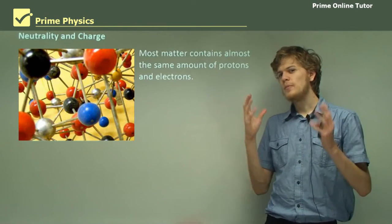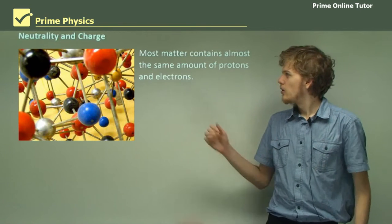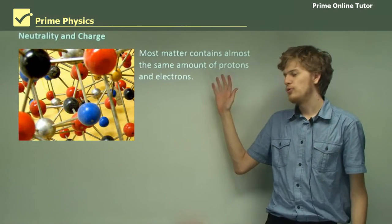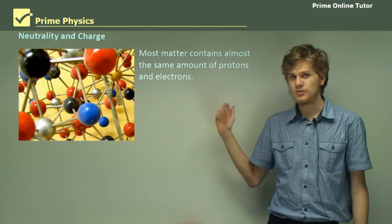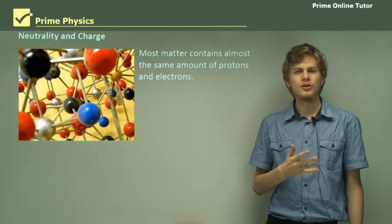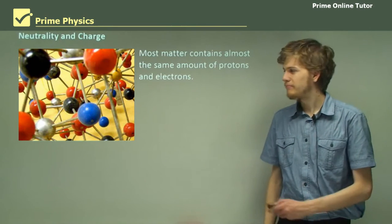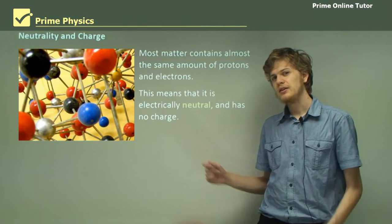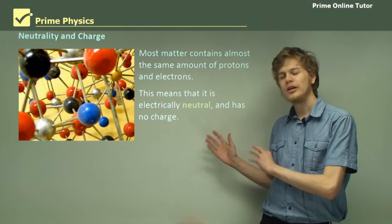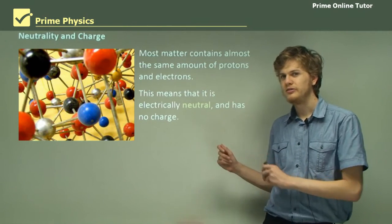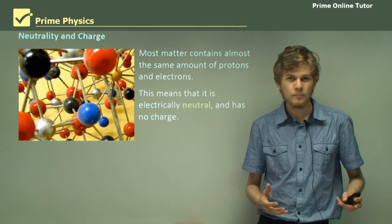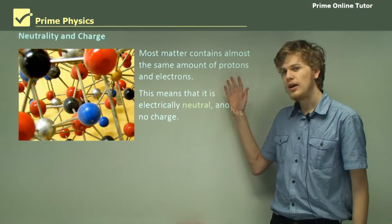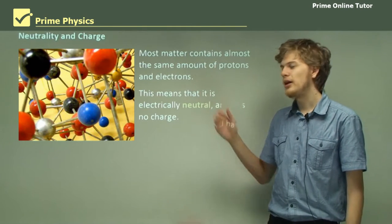Most matter will contain exactly the same amount, or roughly the same amount, of protons and electrons. Both protons and electrons are found in atoms. So what this means is that we have a neutral electric charge, or an electric charge of zero. The electric charge of all the protons cancels out the electric charge of all the electrons.